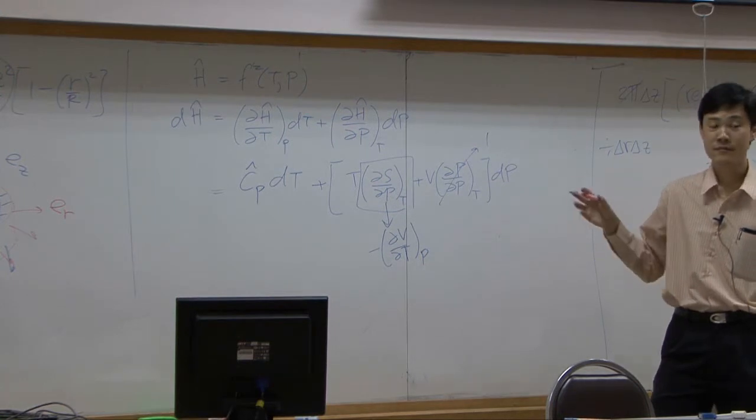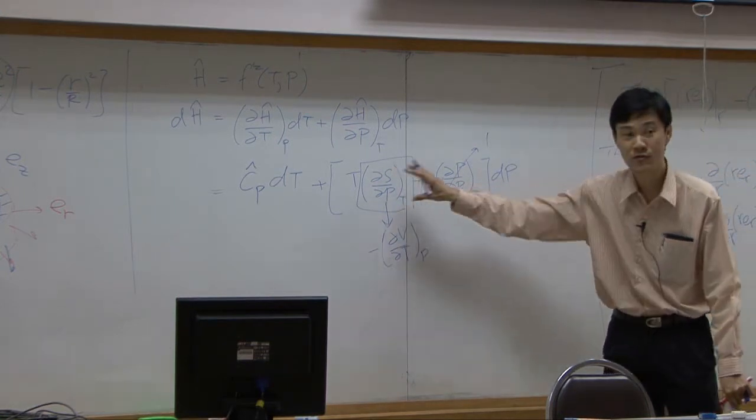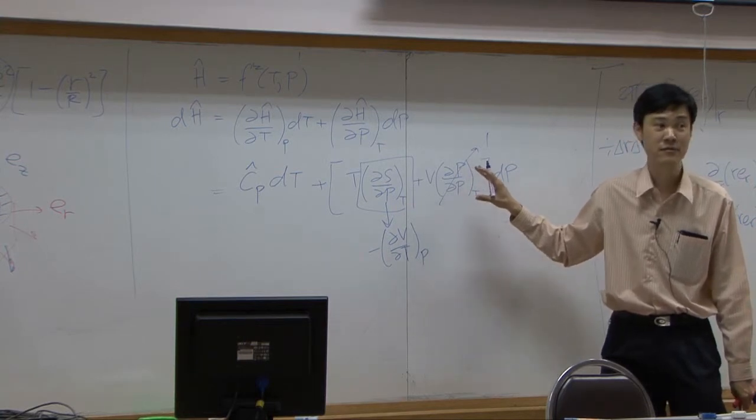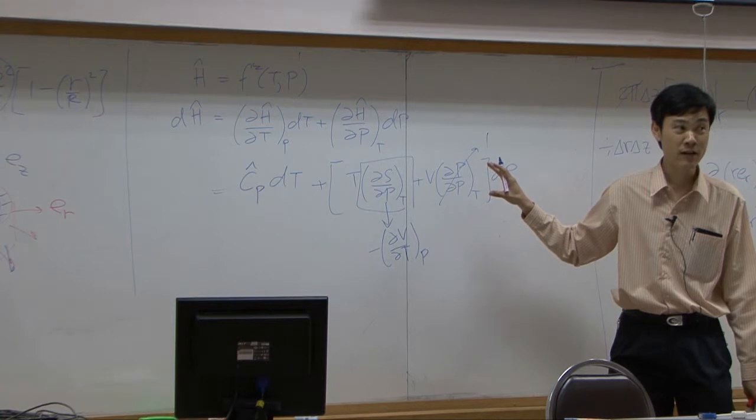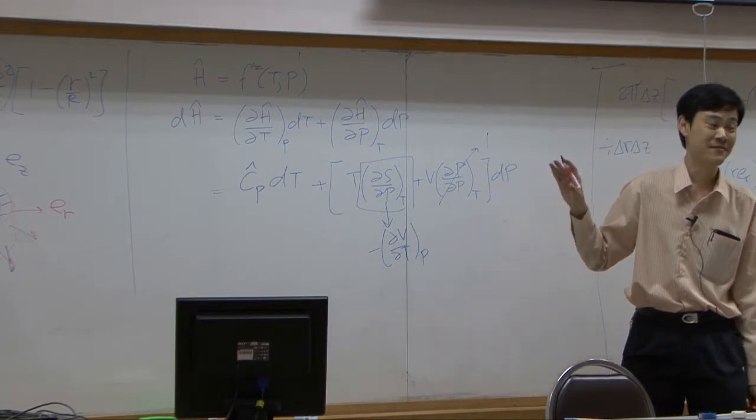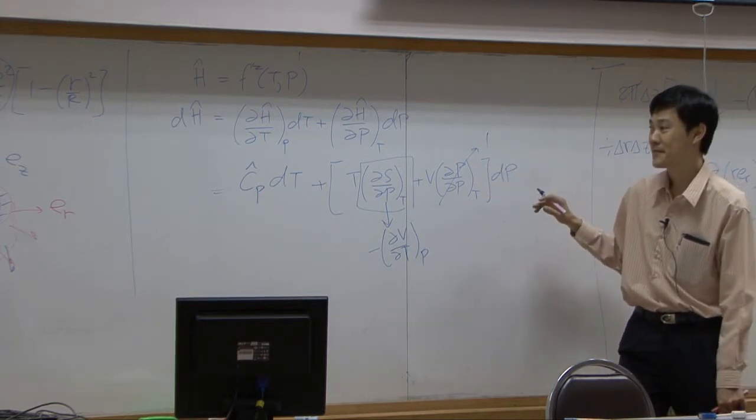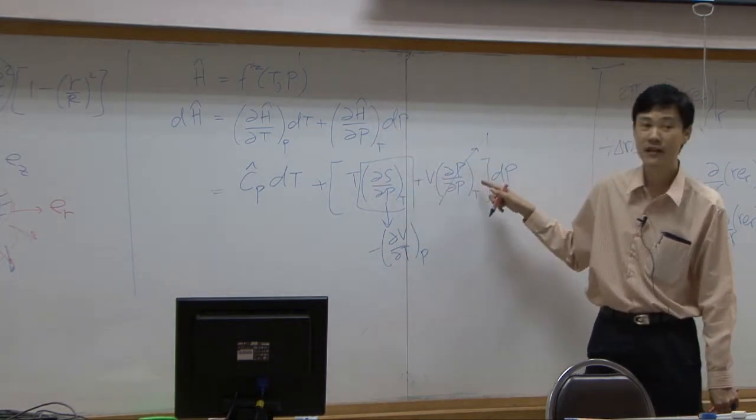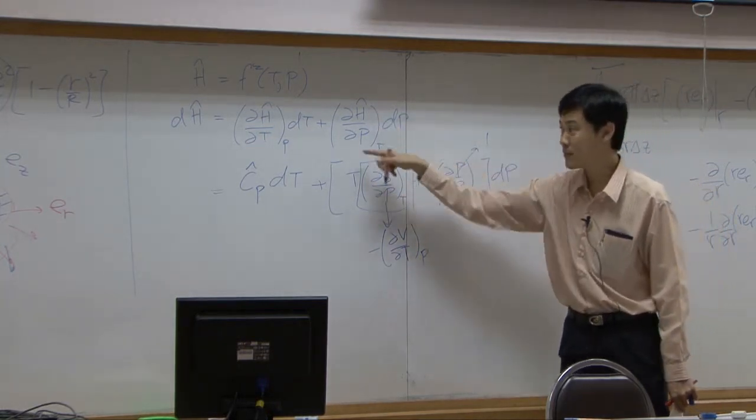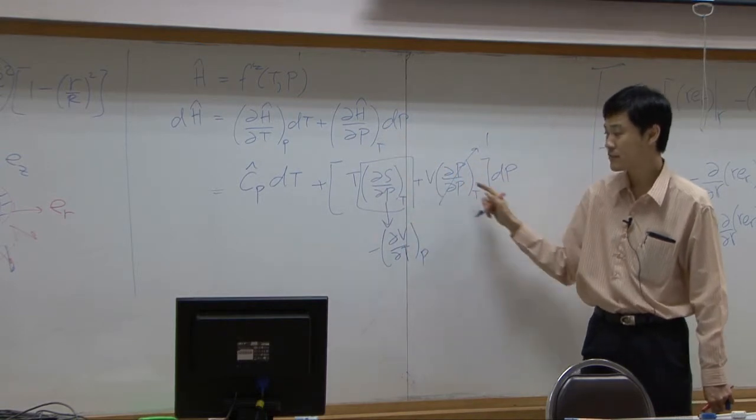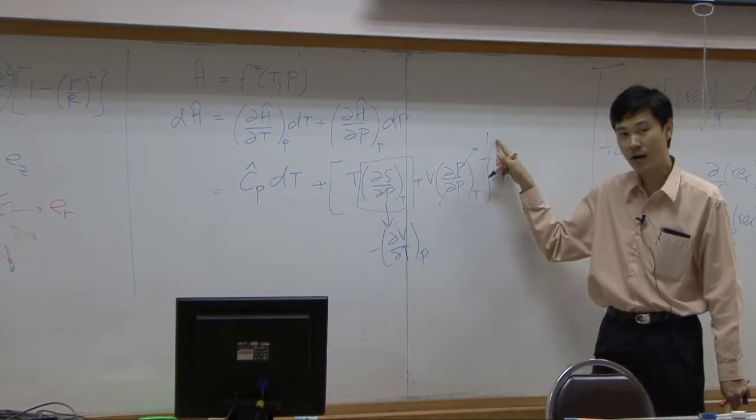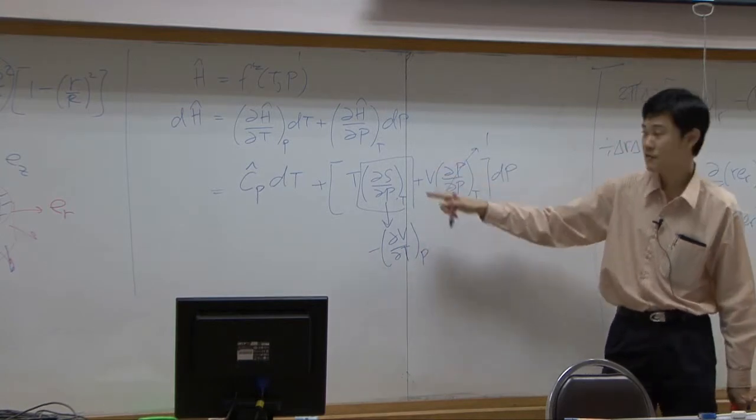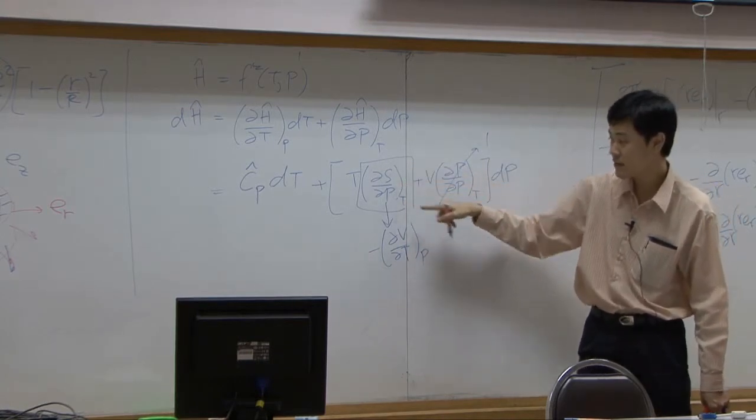I don't need to do it in detail for you guys because I'm sure you remember. Again, enthalpy is TdS plus VdP differentiated with pressure for these two terms, and then this term is dropped because it is one. This term according to Maxwell you can change dS by dP to be dV by dT. That's Maxwell.